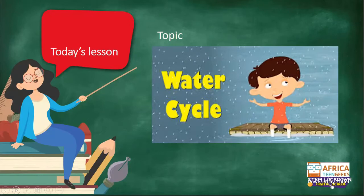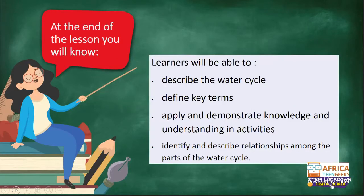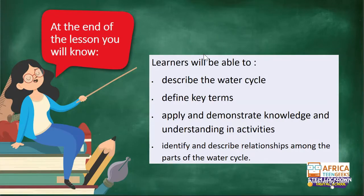At the end of the lesson, learners should be able to describe what a water cycle is, define different key terms — there'll be new terms they'll be learning — and identify and understand them in context. Learners should also apply and demonstrate knowledge through activities, and identify and describe different parts of a water cycle. If I'm moving too fast, just indicate.